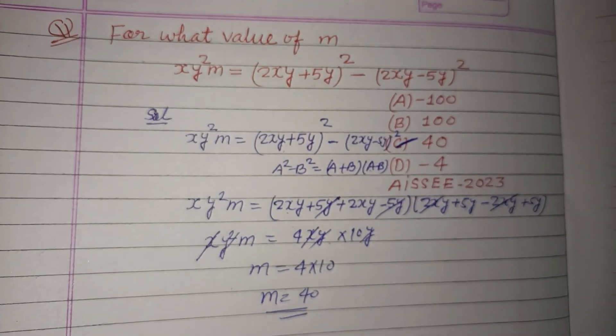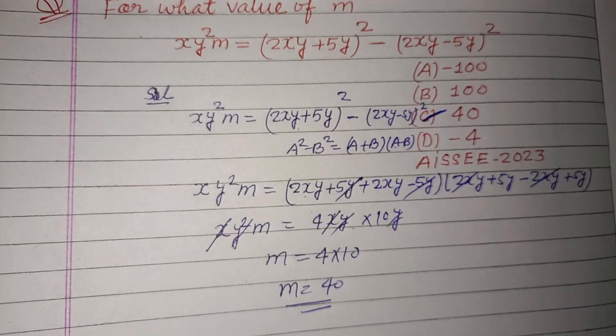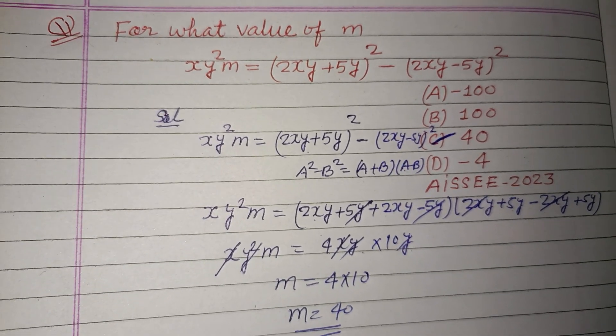So m is 40, which is found in option C. Therefore option C is correct. I hope you got it. Please like the video, subscribe the channel. Thanks for watching you.